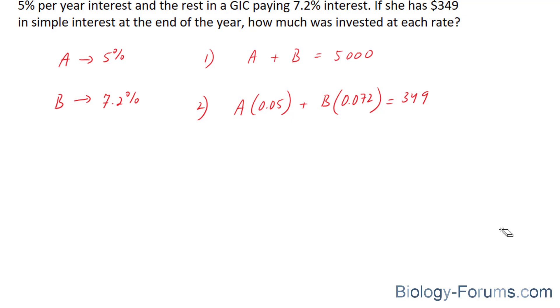Before we begin this process of solving for A and B, let's simplify the second equation. We can simplify it by removing these brackets, since they're not necessary. 0.05A plus 0.072B is equal to 349.